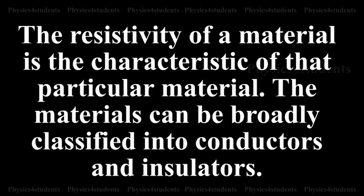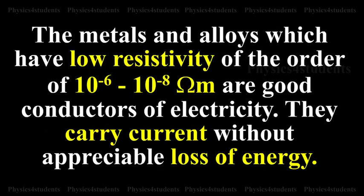Classification of materials in terms of resistivity. The resistivity of a material is the characteristic of that particular material. The materials can be broadly classified into conductors and insulators. The metals and alloys which have low resistivity of the order of 10⁻⁶ to 10⁻⁸ ohm meter are good conductors of electricity.